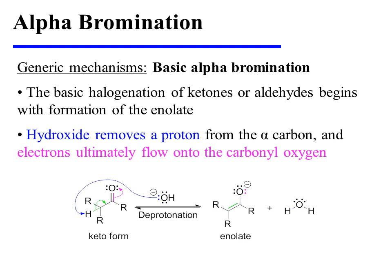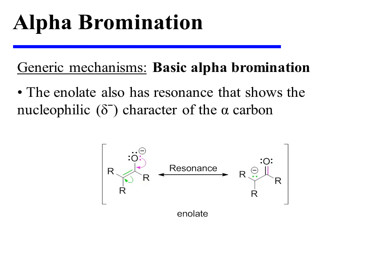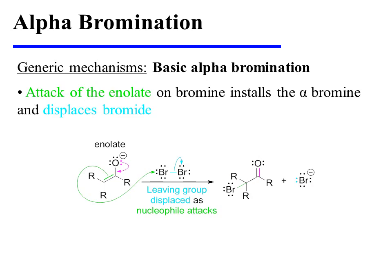The basic halogenation of ketones or aldehydes begins with formation of the enolate. This occurs when hydroxide removes a proton from the alpha carbon and electrons ultimately flow onto the carbonyl oxygen. This enolate has resonance that shows the nucleophilic character of the alpha carbon, so attack of the enolate on bromine installs the alpha-bromine and displaces bromide in the process.